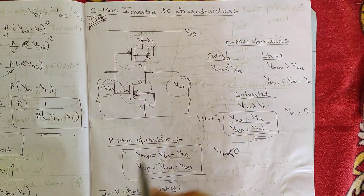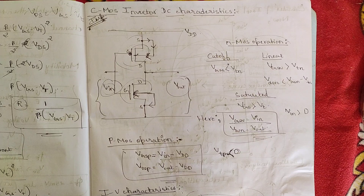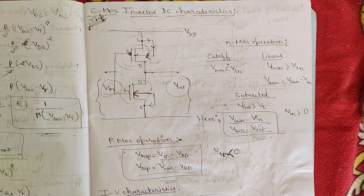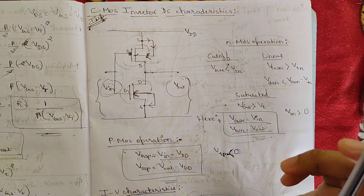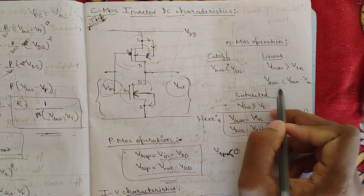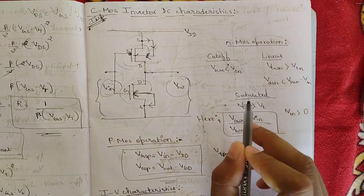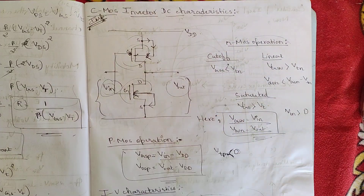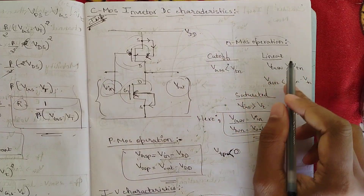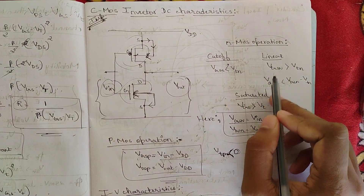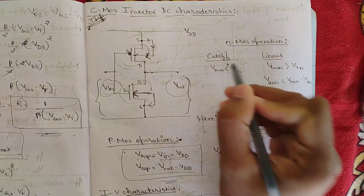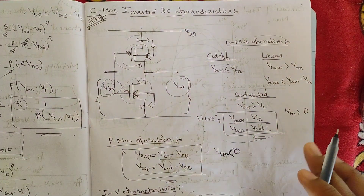For NMOS operation in the inverter, there are three regions: cutoff, linear, and saturation. In cutoff, VGS < VT. In linear, VGS > VT and VDS < VGS − VT. For PMOS, the conditions are reversed: in cutoff, VGSP > VTP; in linear, VGSP < VTP and VDSP < VGSP − VTP. The subscript N denotes NMOS quantities and P denotes PMOS quantities.